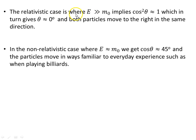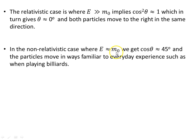In the relativistic case, where the energy E is much greater than the rest mass m₀c², cos²θ is approximately 1, which gives θ approximately 0 — both particles move to the right in the same direction. In the non-relativistic case, where E is approximately equal to m₀c², cos θ gives θ around 45 degrees, and the particles scatter in ways familiar from everyday experience such as billiards.